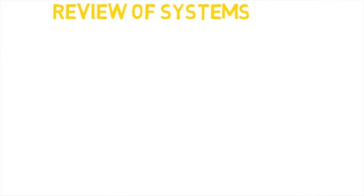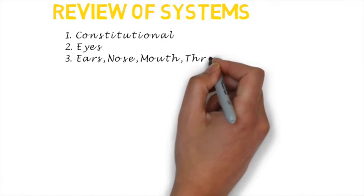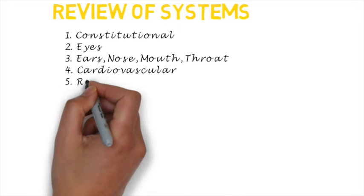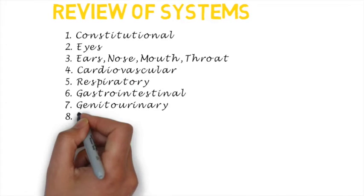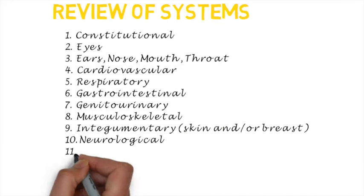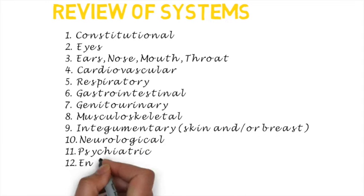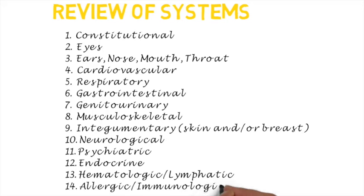The 14 systems are constitutional, eyes, ears, nose, mouth and throat, cardiovascular, respiratory, gastrointestinal, genitourinary, musculoskeletal, and integumentary, which includes the skin or the breast, neurologic, psychiatric, endocrine, hematologic, lymphatic, and allergic or immunologic.